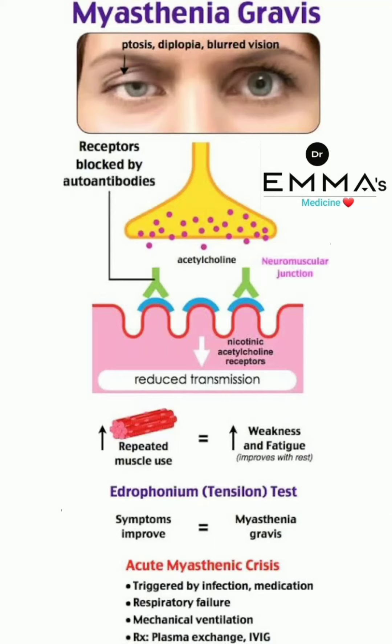Assalamu alaikum dear viewers. In this video I am discussing myasthenia gravis. On the image we can see an eye showing ptosis (drooping of eyelid), diplopia, and blurred vision. These are the features of myasthenia gravis. Now about the pathophysiology: there are receptors blocked by autoantibodies to acetylcholine at the neuromuscular junction.